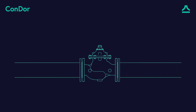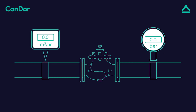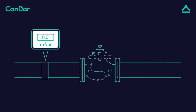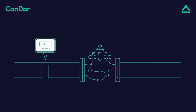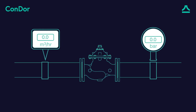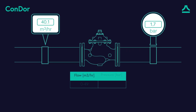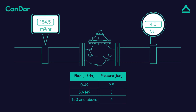First, write down a table of the relation between flow and pressure according to the customer's needs. In this example, we want to keep a fixed pressure for the range of the flow. We will define the steps in a table according to the following parameters: for a flow up to 50 cubic meters per hour, the required downstream pressure is 2.5 bar. For a flow between 50 to 150 cubic meters per hour, the required downstream pressure is 3 bar. For a flow above 150 cubic meters per hour, the required downstream pressure is 4 bar.